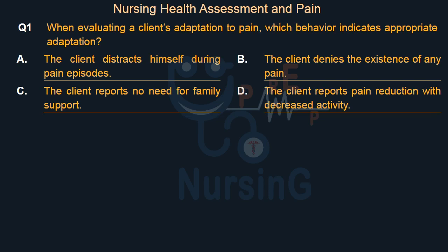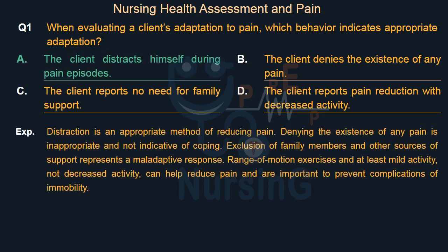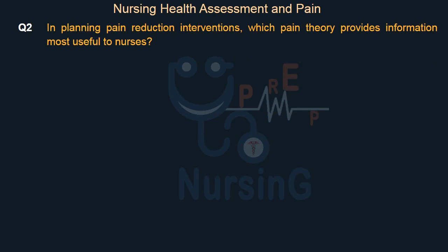The right answer is Option A: The client distracts himself during pain episodes. Distraction is an appropriate method of reducing pain. Denying the existence of any pain is inappropriate and not indicative of coping. Exclusion of family members and other sources of support represents a maladaptive response. Range of motion exercises and at least mild activity, not decreased activity, can help reduce pain and are important to prevent complications of immobility.